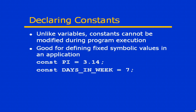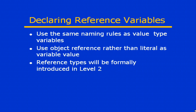The nice thing about constants is that in our program code we can refer to those values by using the constant names, rather than having to refer to the actual numbers or values themselves. Declaring reference variables is very much the same as value type variables. The difference, of course, is that the variable refers to an object on the heap rather than the actual variable value itself.